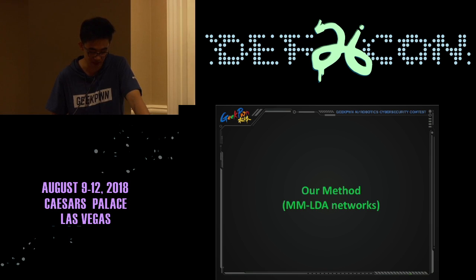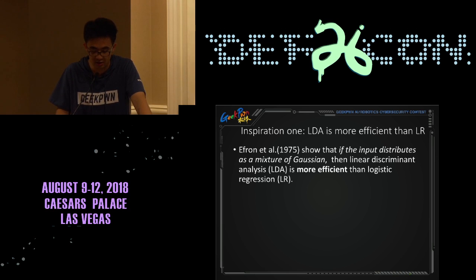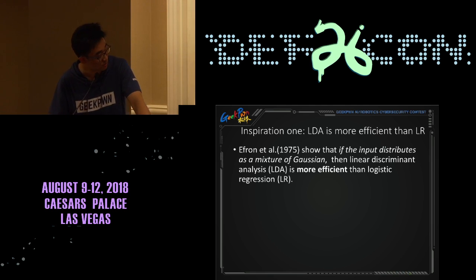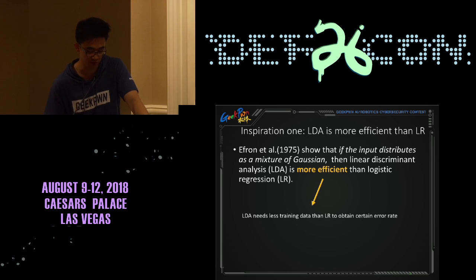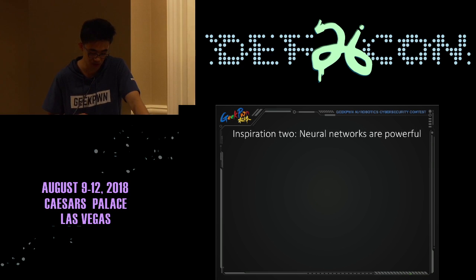Our method comes from two inspirations. The first comes from Efron et al., who showed that if the input distributes as a mixture of Gaussians, then Linear Discriminant Analysis (LDA) is more efficient than logistic regression — meaning LDA needs less training data than logistic regression to obtain a certain error rate. However, in practice, data points hardly distribute as a mixture of Gaussians in the input space.